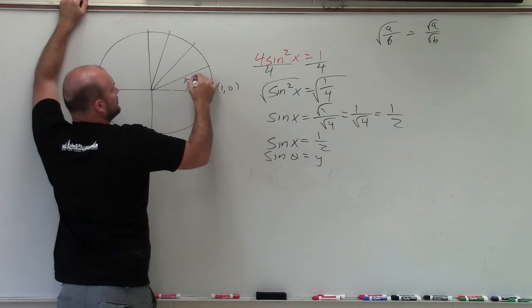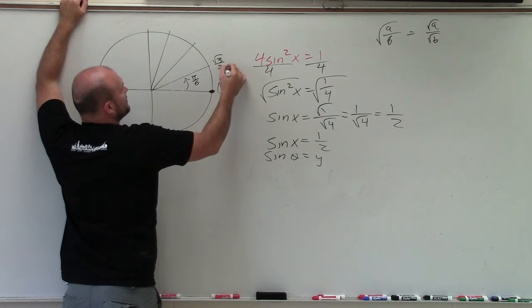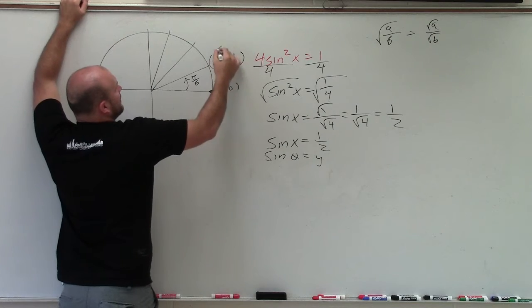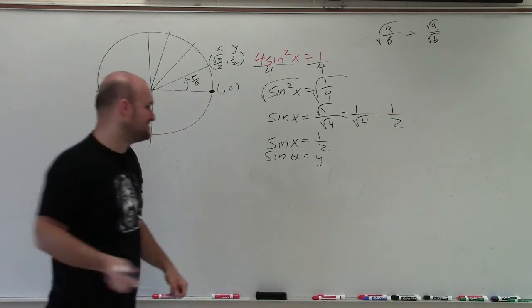Let's go to the next angle, pi over 6. Well, that angle is square root of 3 over 2 comma 1 half, xy. Guess what? Ding, ding, ding, ding, ding. We found our first answer.